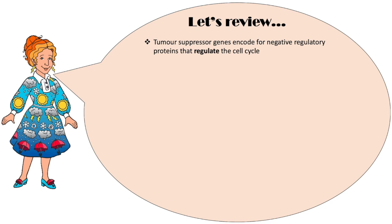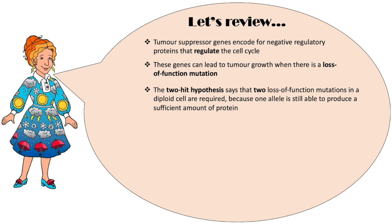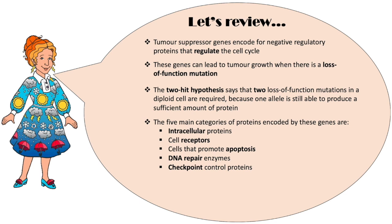Let's review. Tumor suppressor genes encode for negative regulatory proteins that regulate the cell cycle. These genes can lead to tumor growth when there is a loss-of-function mutation. The two-hit hypothesis says that two loss-of-function mutations in a diploid cell are required, because one allele is still able to produce a sufficient amount of protein. The five main categories of proteins encoded by these genes are intracellular proteins, cell receptors, proteins that promote apoptosis, DNA repair enzymes, and checkpoint control proteins. They regulate the cell cycle by arresting the cell at the G1 checkpoint.